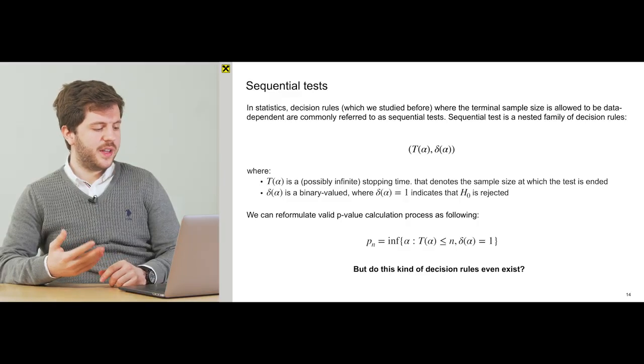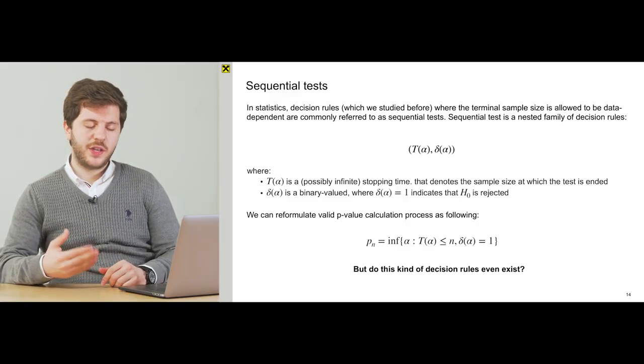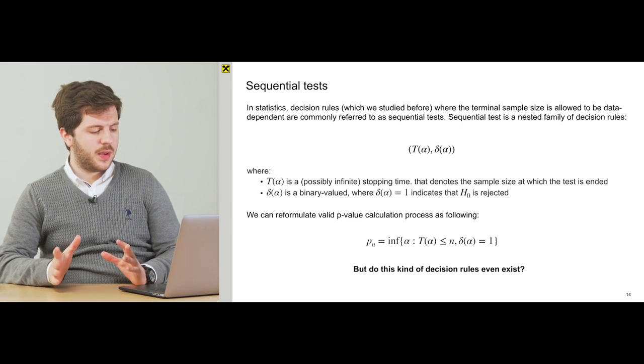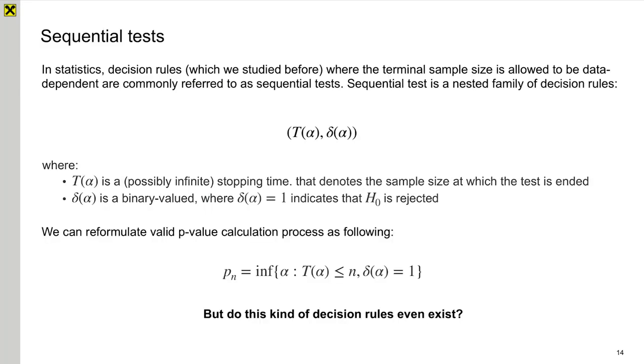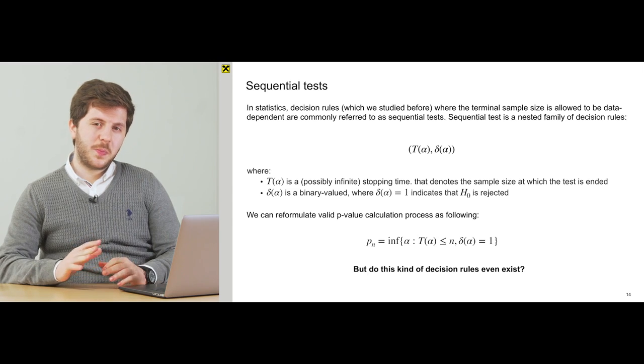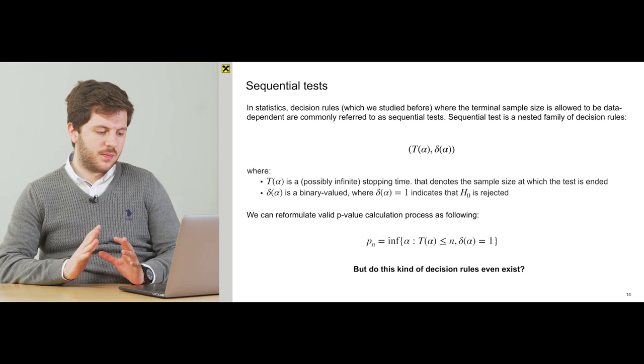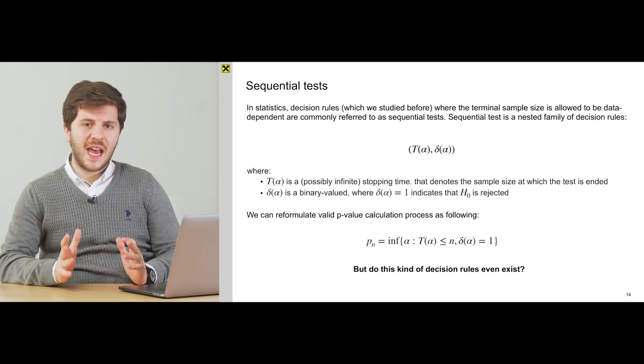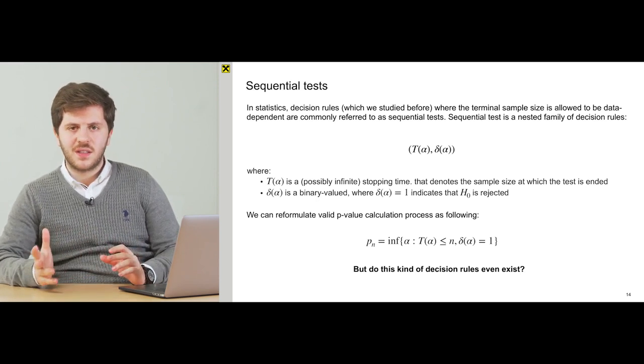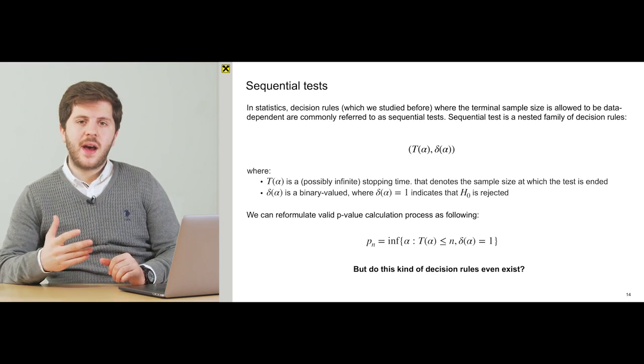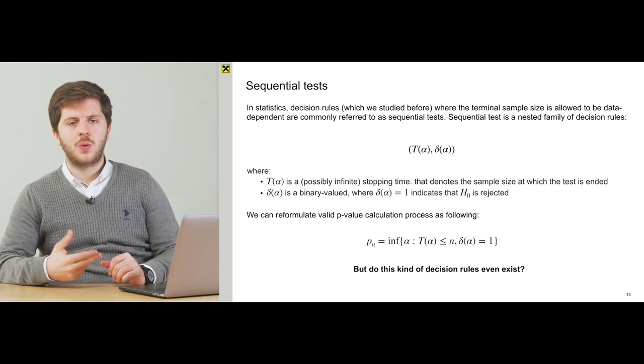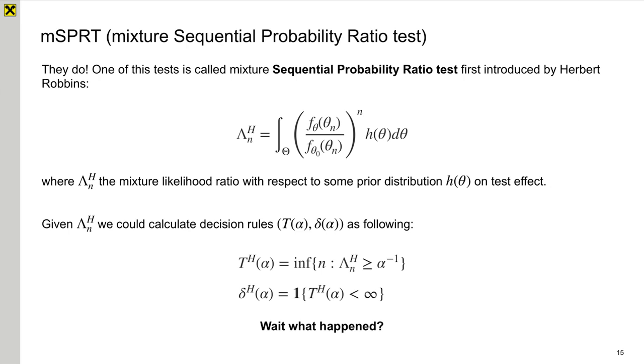And so we could reformulate our valid p-value calculation process in the following way. We will say that it's the smallest alpha when our sample size t of alpha is smaller than n and delta is 1. I think that it's pretty hard to understand. But do these kind of decision rules t and delta even exist? And this is a question I want to answer. And they do exist.